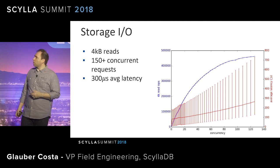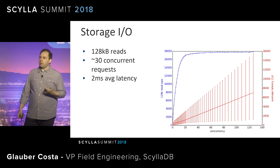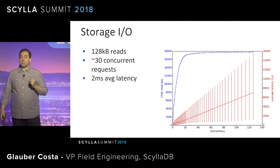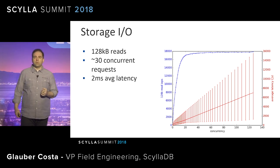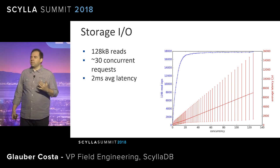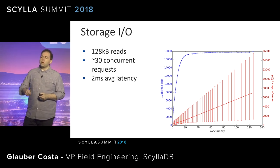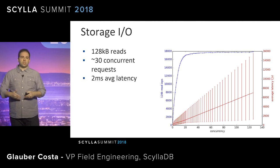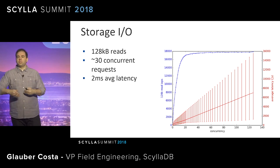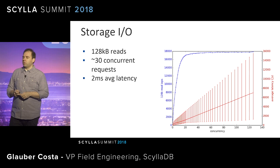Except that's not true, because if I plot the same curve using 128-kilobyte requests, the saturation point happens way lower — around 30 requests — and at that point my latency is no longer 300 microseconds; it's 2 milliseconds. So if I send 150 requests because that's what the tuning utility gave me, I'm going to be way past the saturation point in this scenario. And sometimes we do have to send bigger requests.